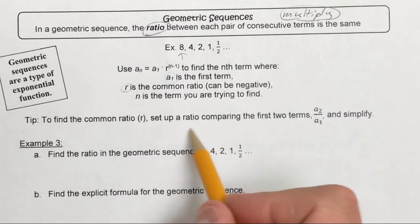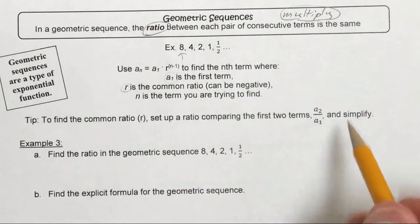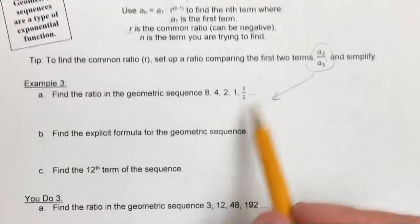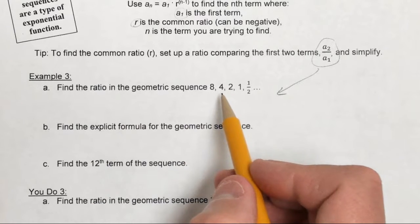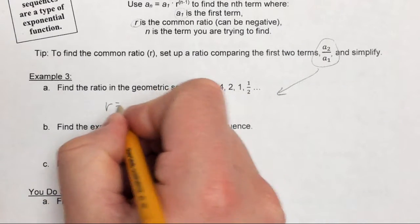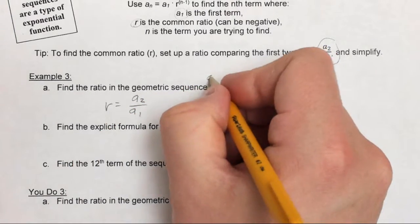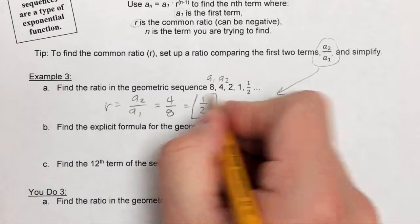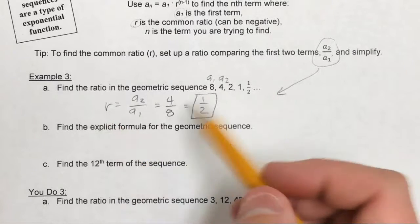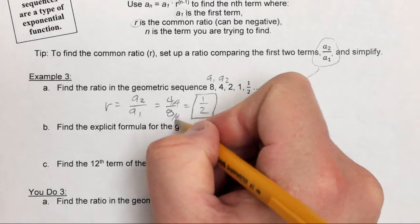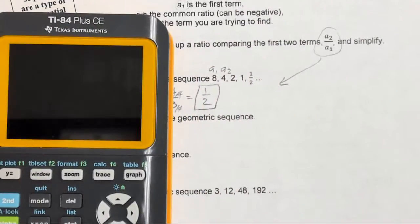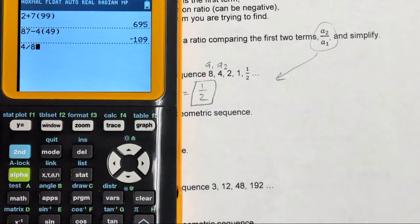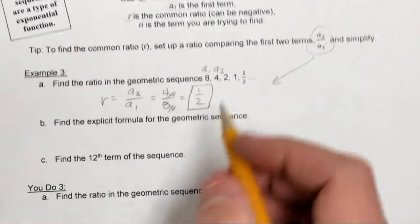To find the common ratio r, set up a ratio comparing the second term to the first term. In the sequence 8, 4, 2, 1, one-half, my first term is 8 and second term is 4. So 4 over 8 reduces to one-half. Always reduce your ratio as much as you can. If you have a calculator, you can do 4 divided by 8 and convert to fraction form. The common ratio is one-half.